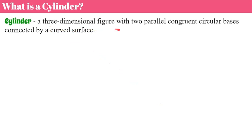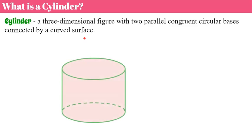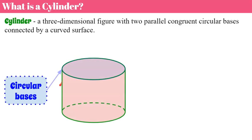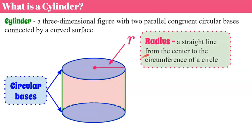Let's talk about what a cylinder is. A cylinder is a three-dimensional figure with two parallel, congruent, circular bases connected by a curved surface. The circular bases are parallel to each other — think of a can. The radius is a straight line from the center of the circle to the circumference. The distance around a circle — the perimeter — is called circumference, because the circle is curved. We call it perimeter for any other figure, but for a circle we call it circumference. So the radius goes from the center of a circle to the outer edge, which we call the circumference.